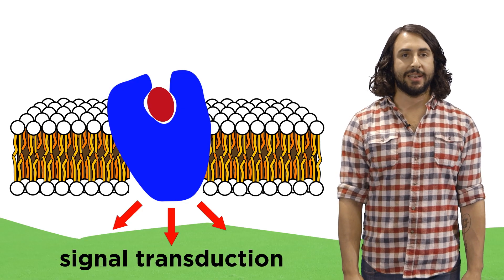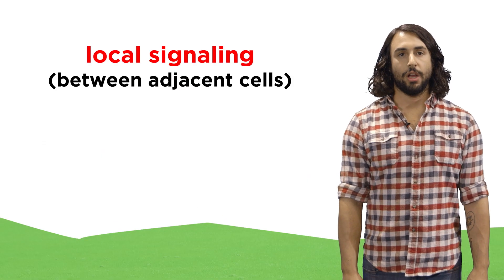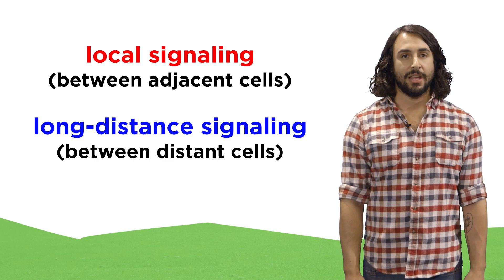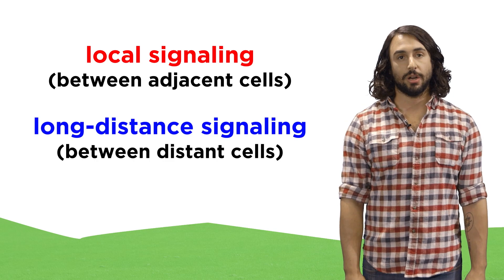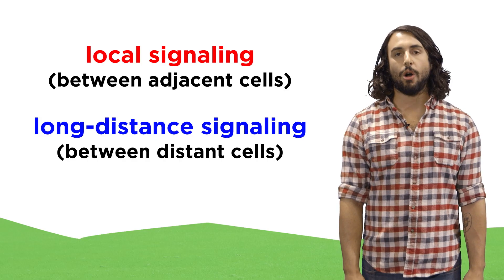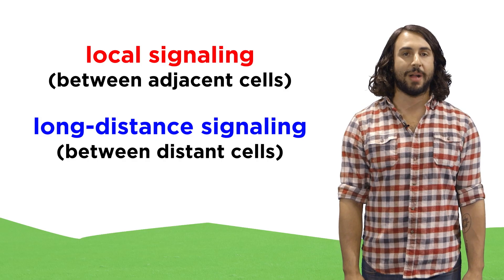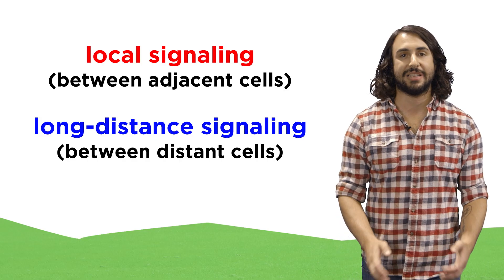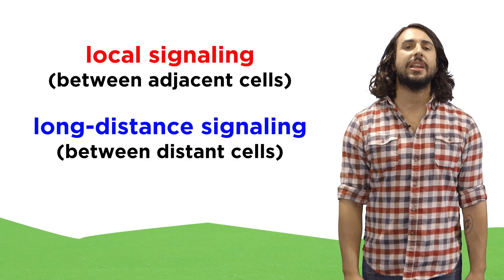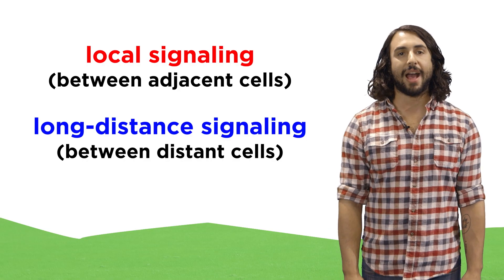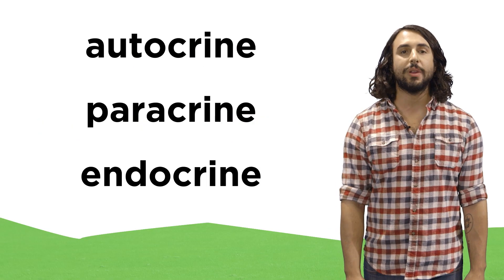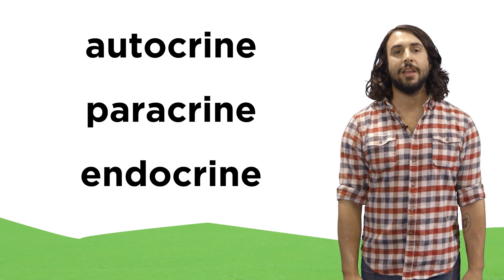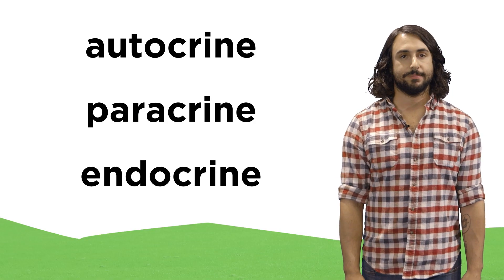Some of this signaling is local, occurring between adjacent cells, but long-distance signaling can also occur, where a message travels all the way across your body to deliver a signal to a particular type of cell. In examining these signaling pathways, we want to talk about three types of signaling: autocrine, paracrine, and endocrine.